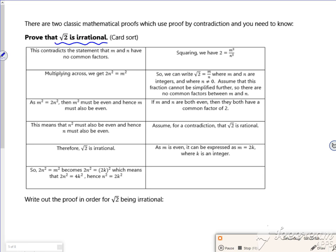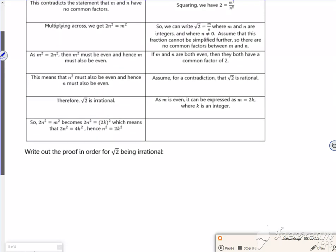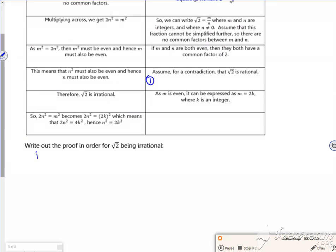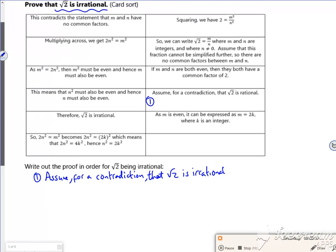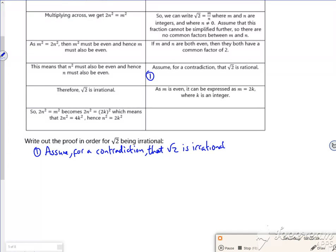Proving that root two is irrational. So the first thing I'm going to go with is my assumption here, the first one. So the first one is that I'm going to assume for a contradiction that root two is irrational. Because my thing here is proving it is rational, not irrational.